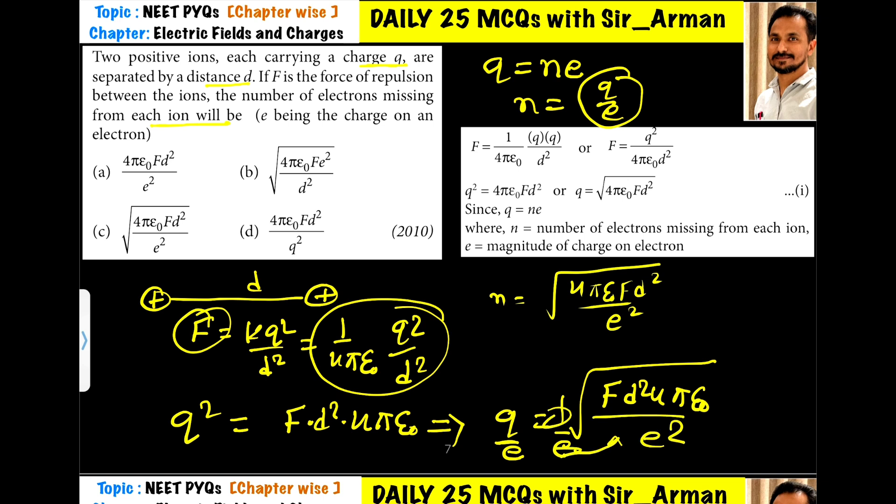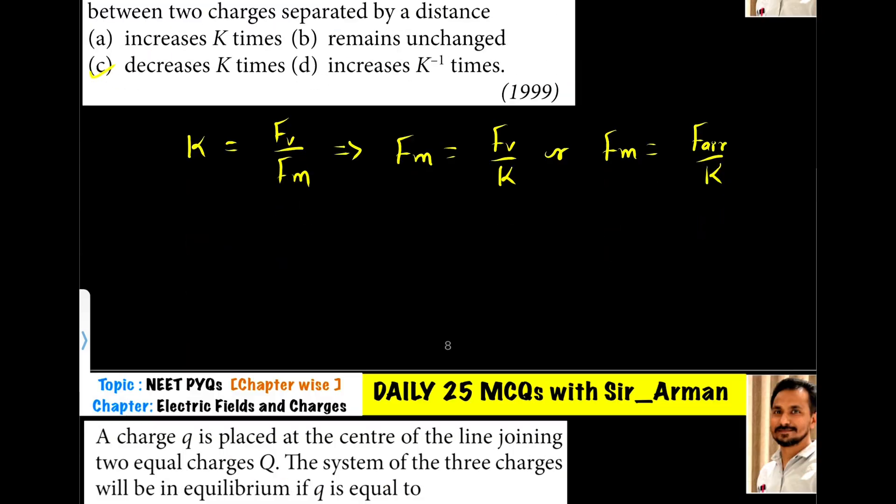Which one is matching this? It is 4 pi epsilon 0 f d square under root e squared. So option number C is the correct one.